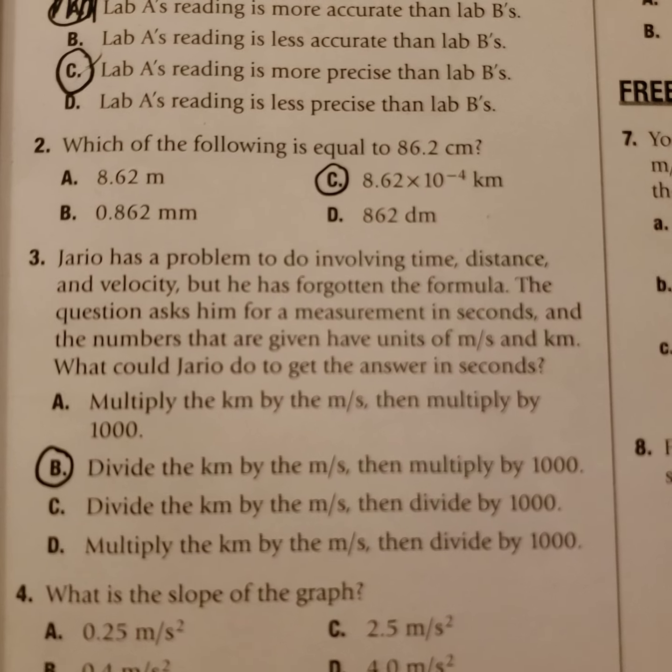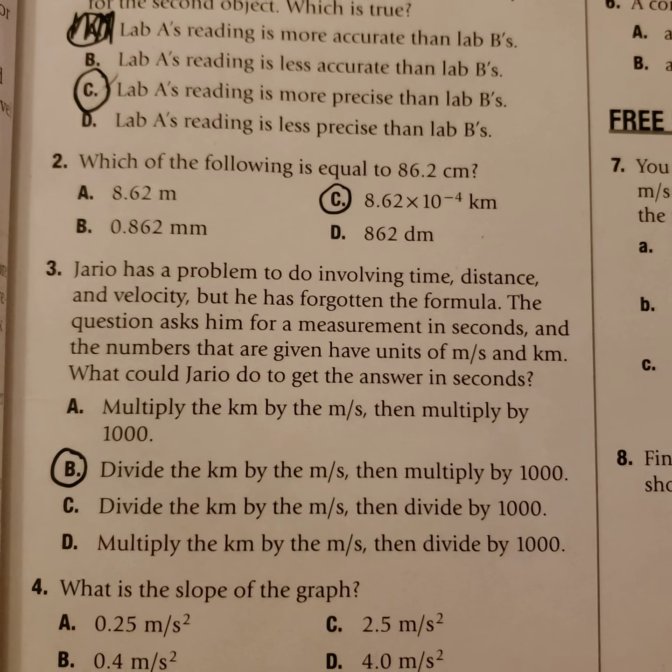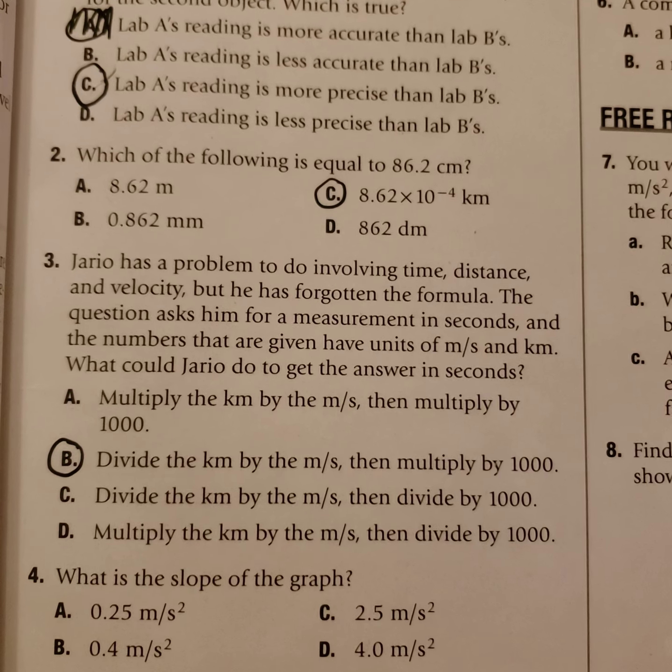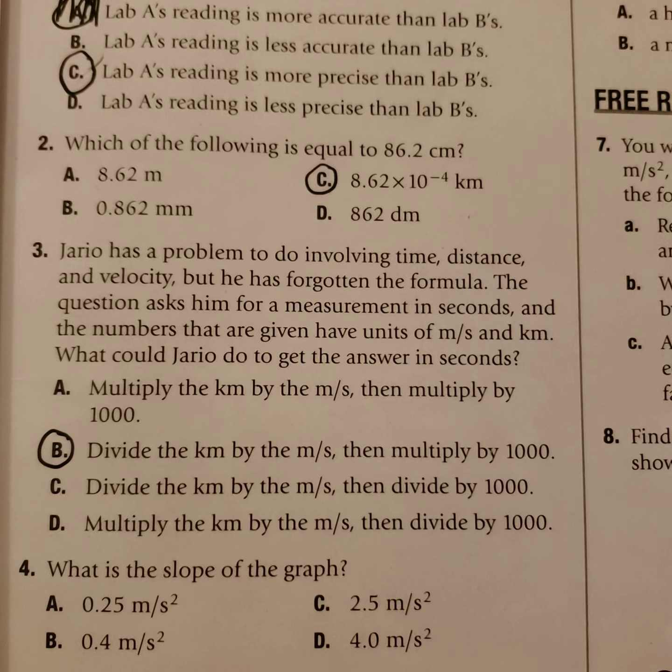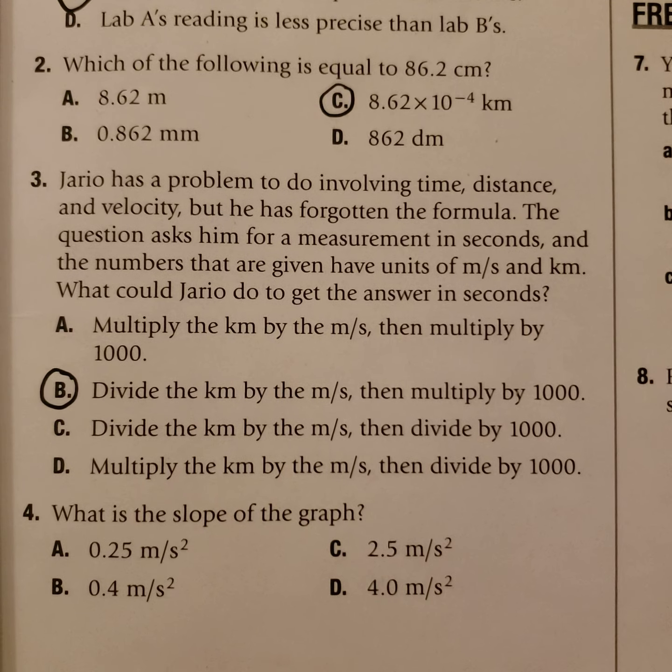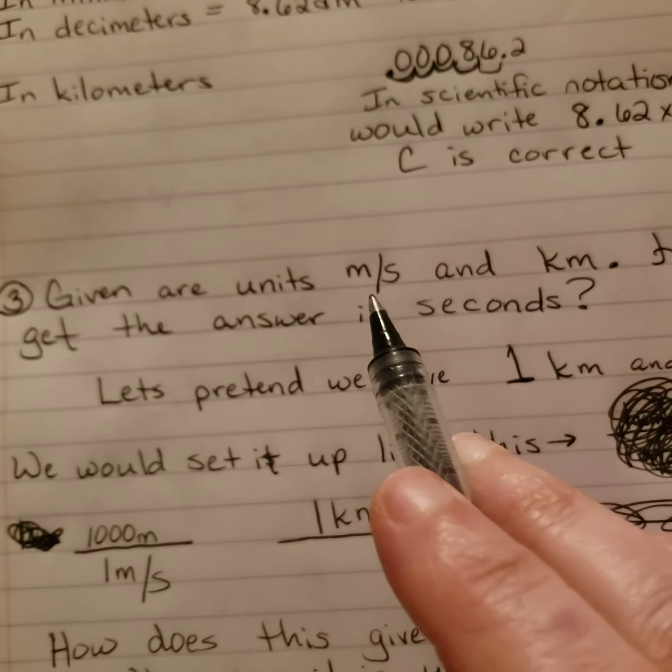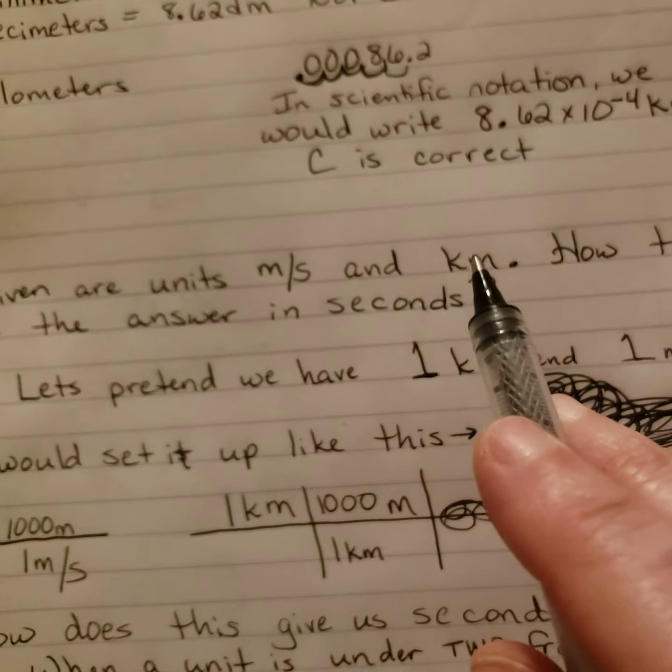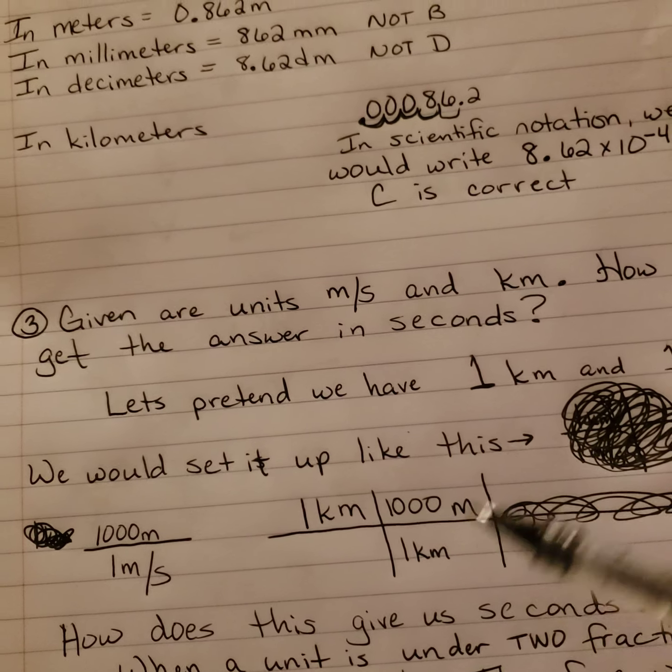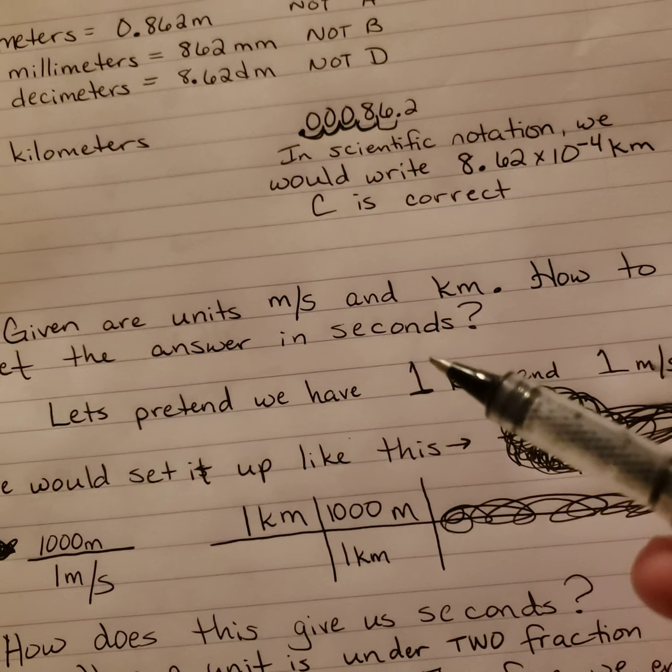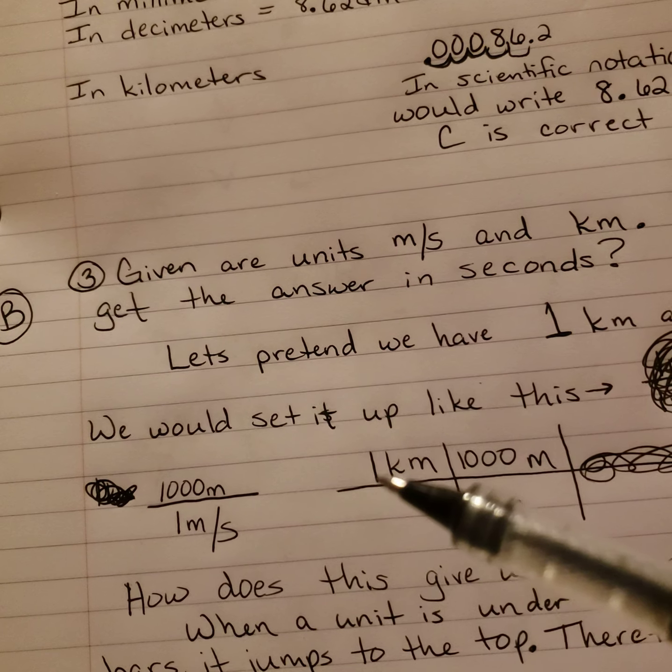Number 3. Giorgio has a problem to do involving time, distance, and velocity, but he has forgotten the formula. The question asks for a measurement in seconds, and the numbers are given with units of meters per second and kilometers. So what's he going to do to get the answer in seconds? The answer is B, but let me show you why. The given units are meters per second and kilometers. I always like to put numbers with my units just because it helps me. So we have 1 kilometer and 1 meter per second. How would I set this up? I'd do 1 kilometer.